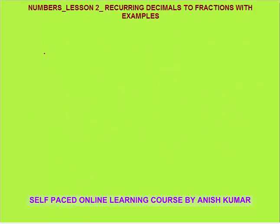Another example: let x equal 3.125 bar, meaning 5 is repeating. Pause the video and try to solve yourself, then compare with my solution. I will solve this in a faster manner because in an exam you don't want to spend too much time. There are two non-repeating digits: 1 and 2.